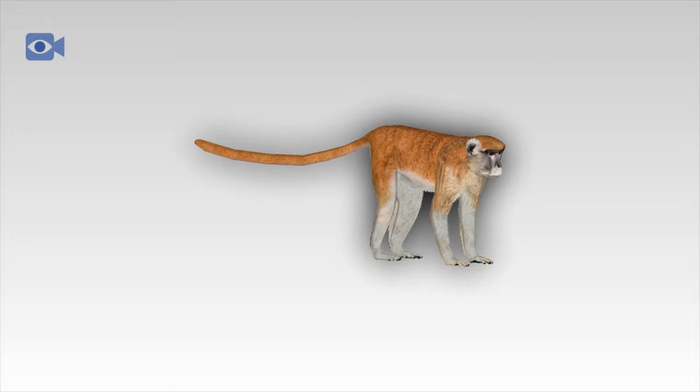The Patas monkey is natively found in a broad band throughout Central Africa that is bordered by the Sahara Desert to the north and the moist tropical conditions of the equatorial forests to the south. They can be found as far west as Senegal to Ethiopia in the east and as far south as Tanzania in the east and Cameroon in the west.